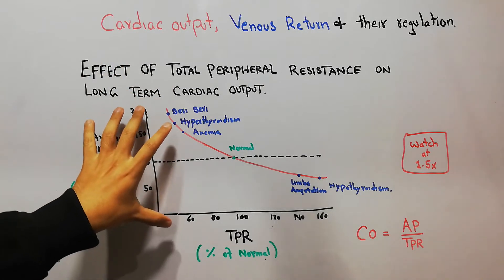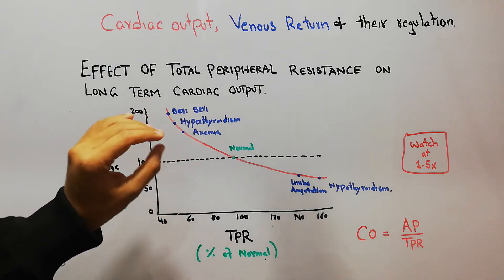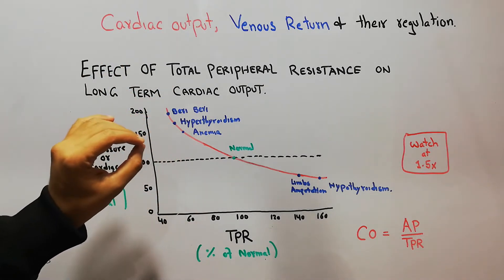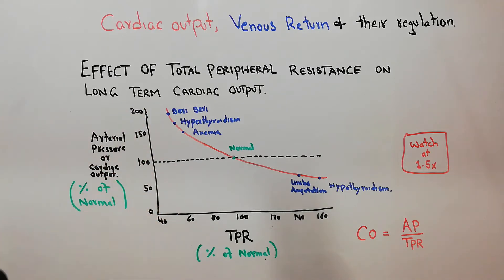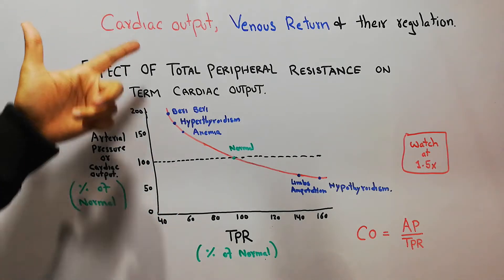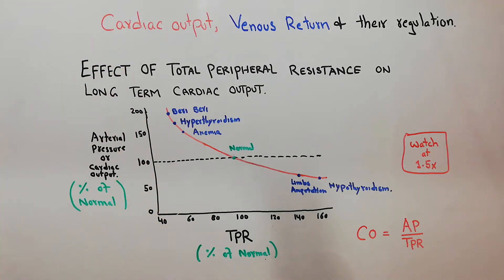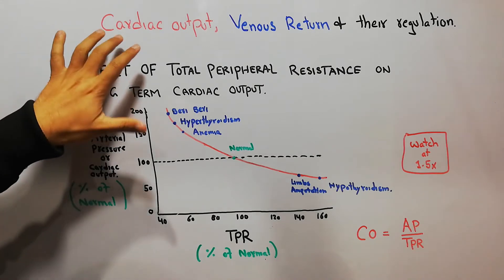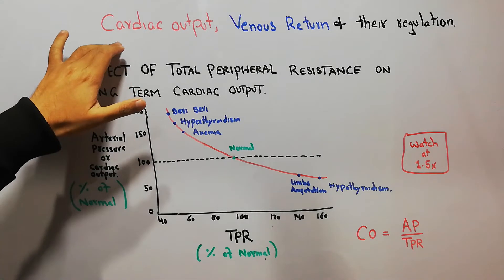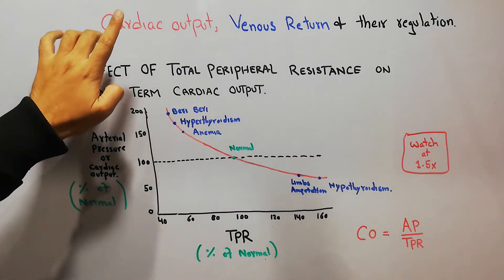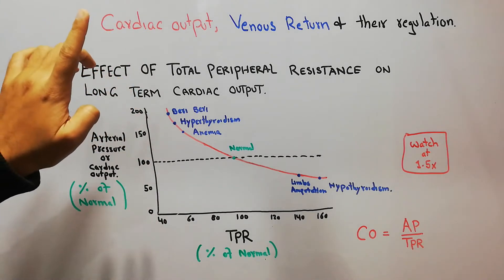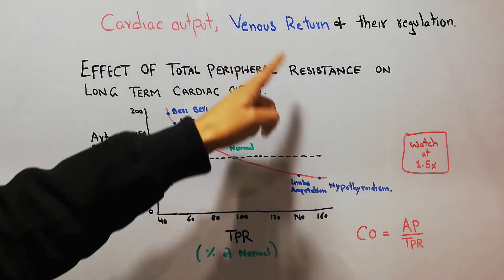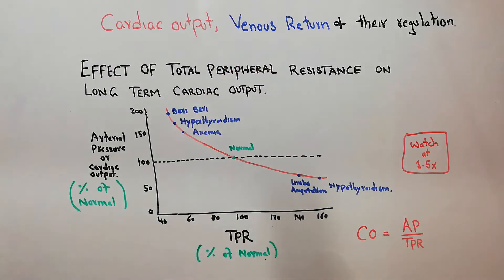We have discussed this topic previously as well, but as we are discussing cardiac output it is important to discuss it once again. Basically, cardiac output is the amount of blood that the heart pumps per minute, and the venous return is the amount of blood that returns to the heart every minute.